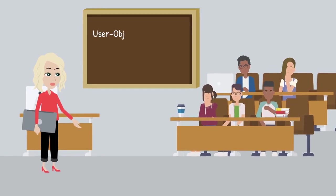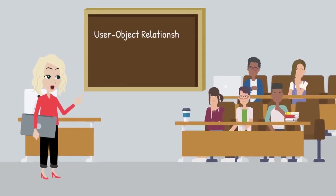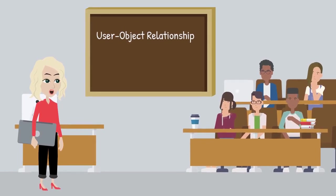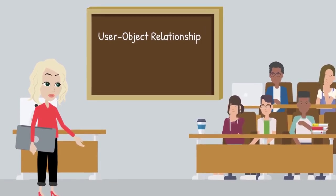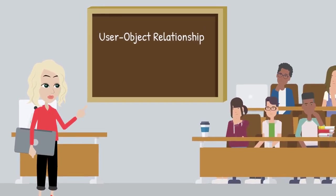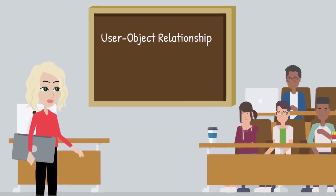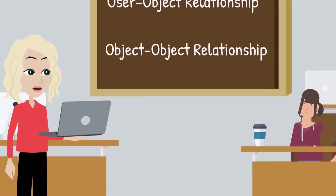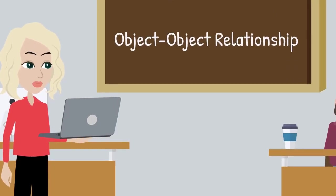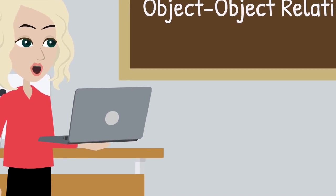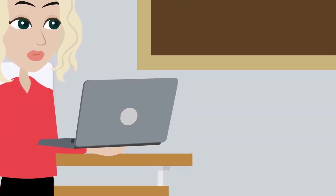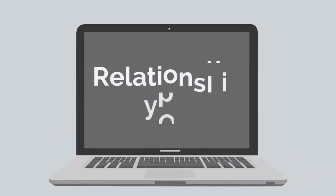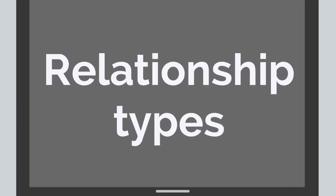Relationships in a social IoT system can be classified into two types: user-object relationship, where there exists some form of association between the user and a physical object, and object-object relationship, where physical objects are bound to each other through some relation. In social IoT applications, the type of relationships plays a very crucial role.